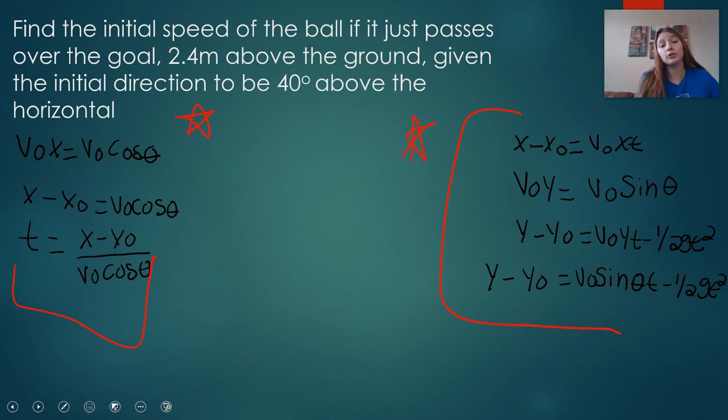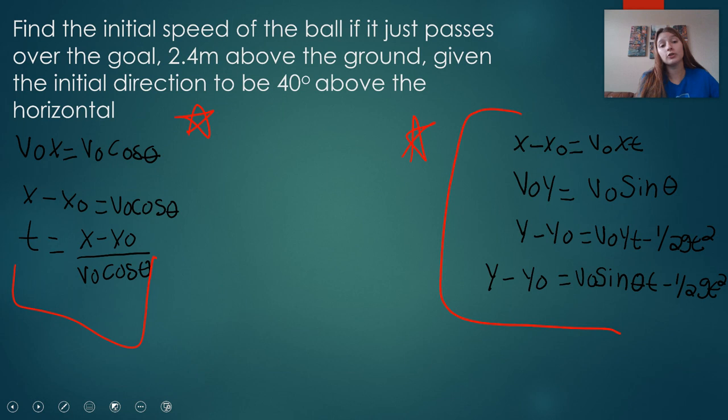The question asks us to find the initial speed of the ball as it passes over the goal, and so the final answer is 17.49 meters per second.